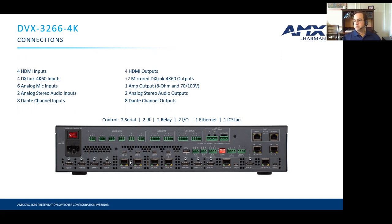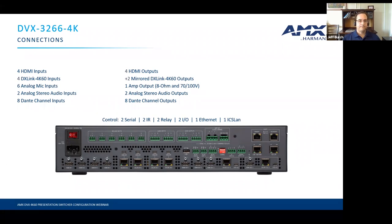Along the bottom are the video connections. The 3266 has four HDMI inputs and four DX Link inputs, each with USB 2.0 pass-through. There are four HDMI outputs, two of which are mirrored to DX Link outputs — each DX Link output also has its own USB 2.0 connection. Whatever video is routed to an output comes out of both the HDMI and the DX Link output simultaneously. All DX Link ports are powered, so connected transmitters and receivers will be powered automatically.